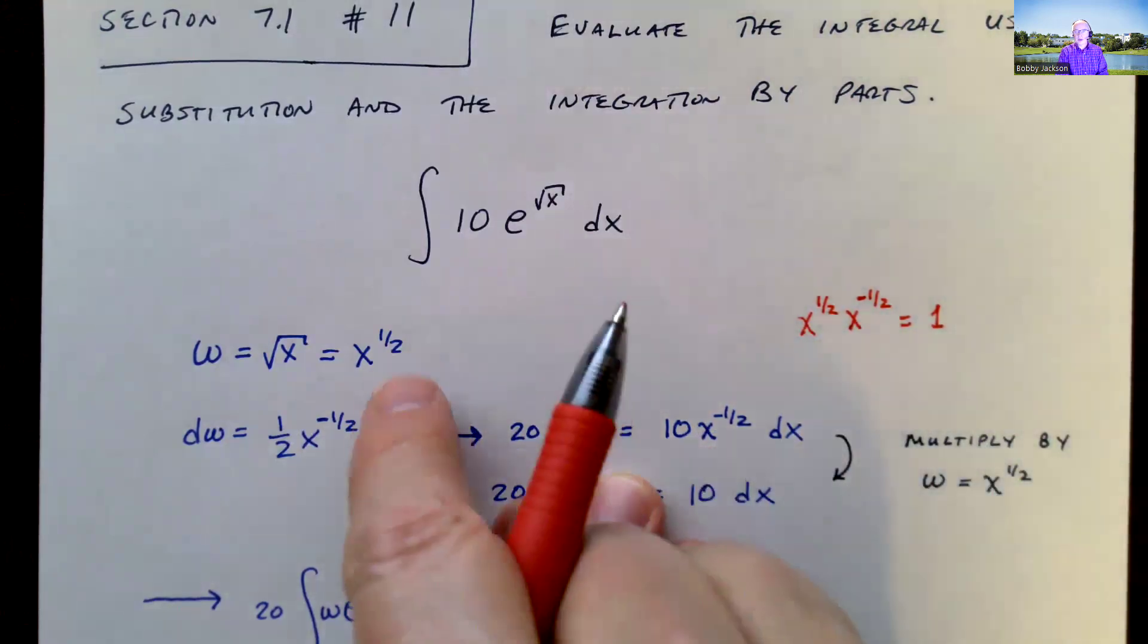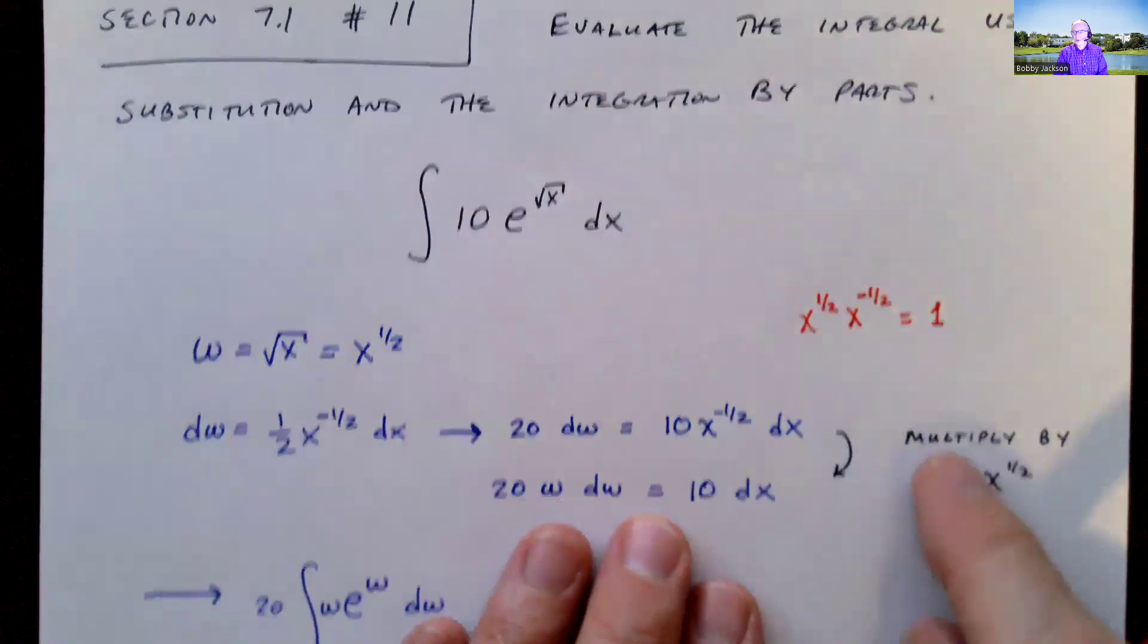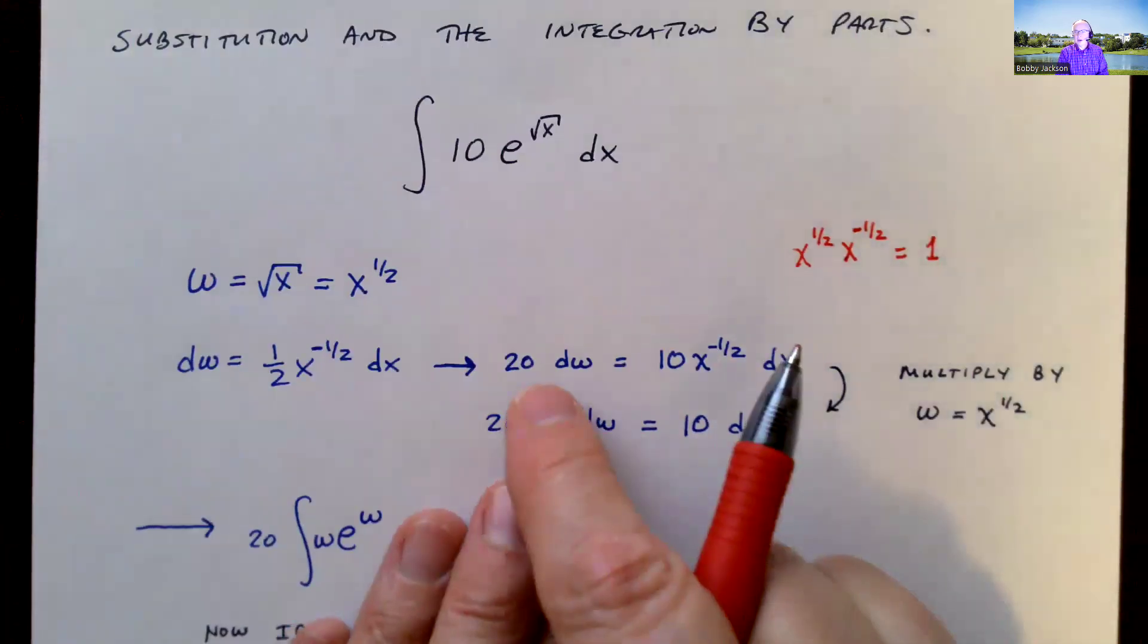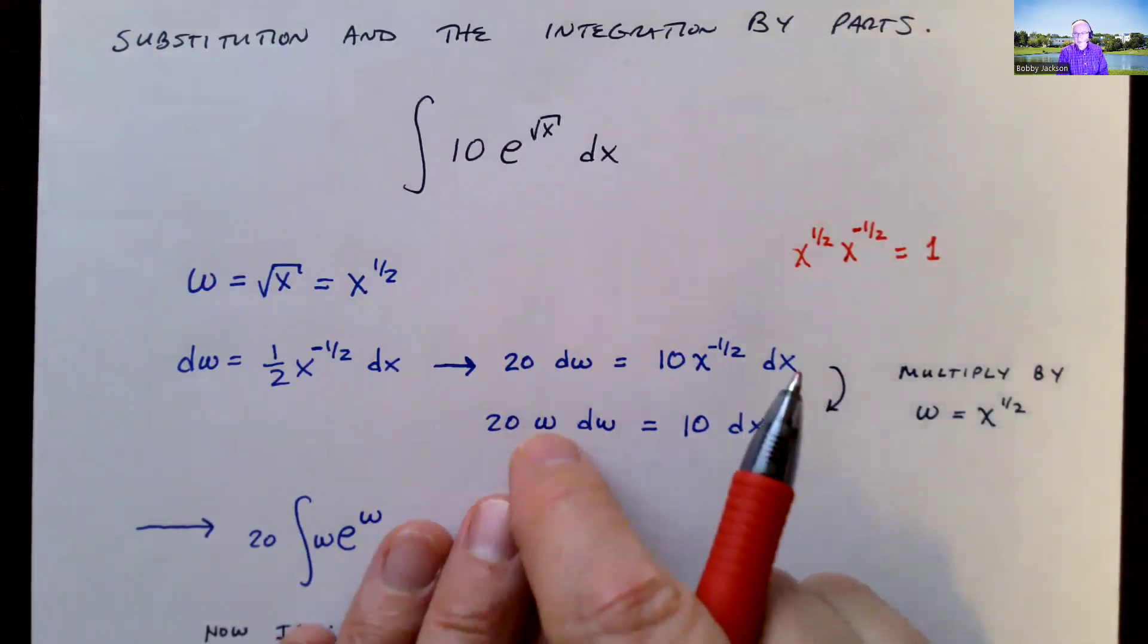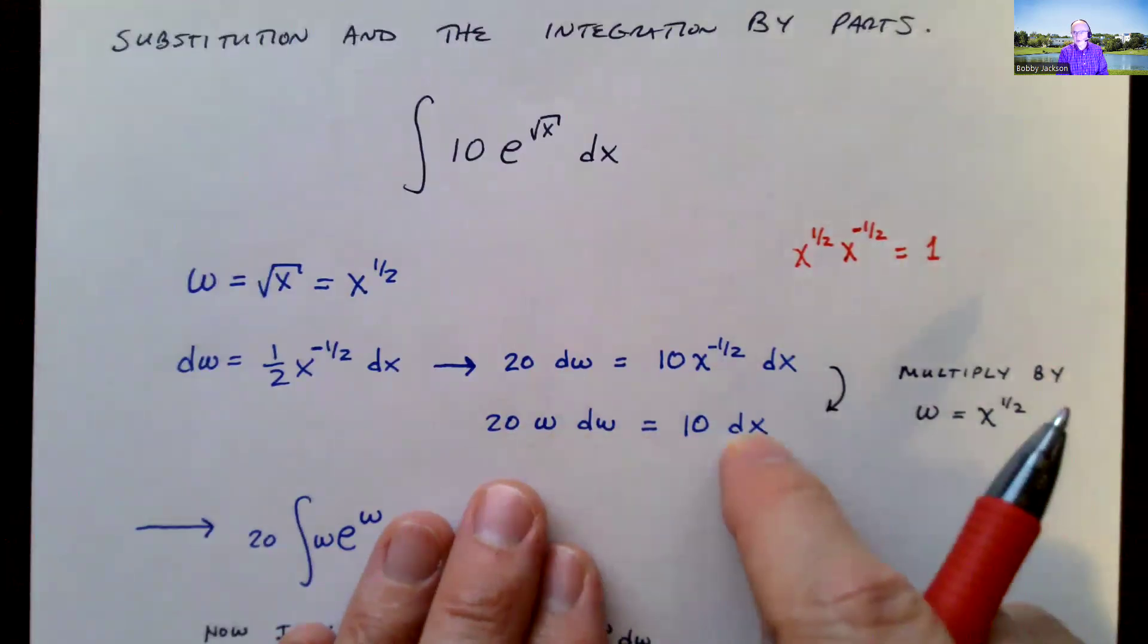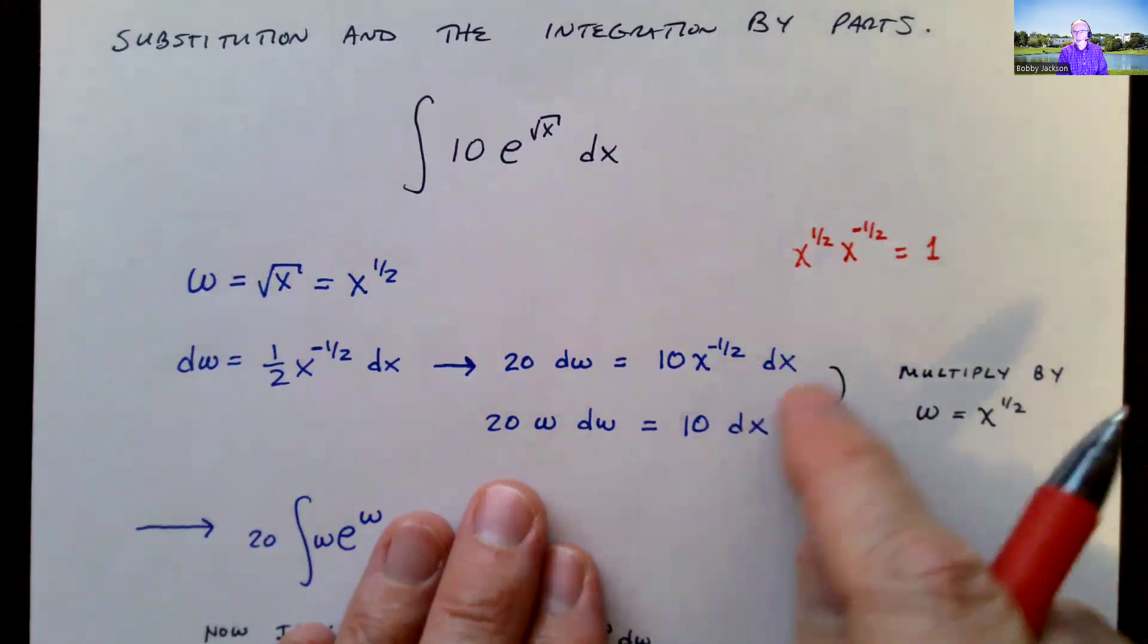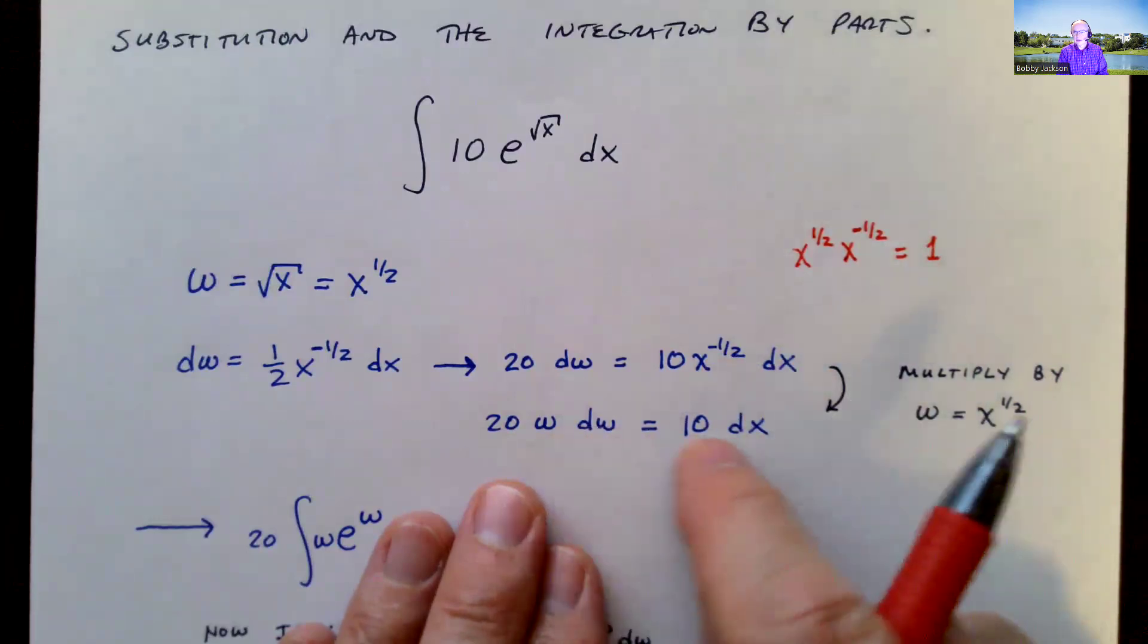But remember, x to the one-half is the same thing as w. So I'm going to multiply by, on this side, by x to the one-half or the square root of x in terms of as w, right? W is equal to the square root of x. Here I multiply by the square root of x. And of course, that gives me just 10, right, when I multiply that. So both sides multiply by the square root of x gives me this. And now I'm set.